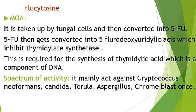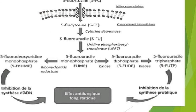The next drug is flucytosine. Its mode of action: flucytosine is taken up by the fungal cell and converted into 5-fluorouracil, which is then converted into 5-fluorouridylic acid. This mainly inhibits thymidylate synthase, which is necessary for the synthesis of thymidylic acid — a key component required for DNA synthesis.